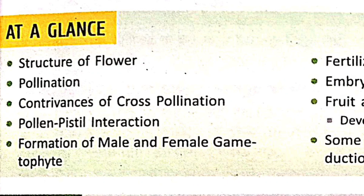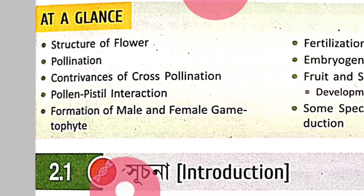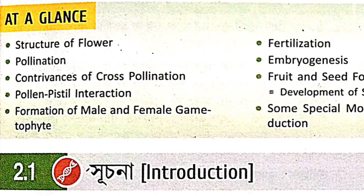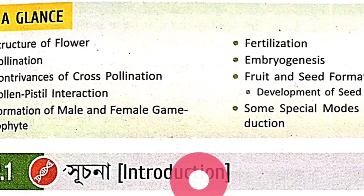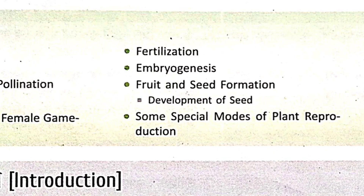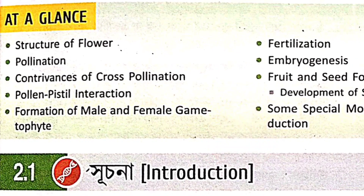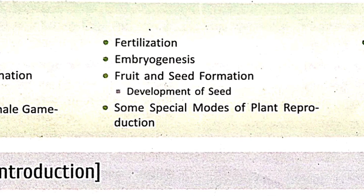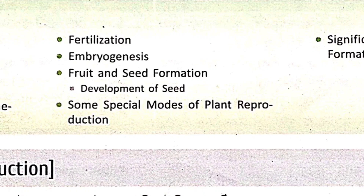Next, formation of male and female gametophyte. Formation means Microsporogenesis and Megasporogenesis - it is important. Fertilization is also important. Embryogenesis is important. So last three points: pollen-pistil interaction, formation of male and female gametophyte, fertilization, embryogenesis. Fruit and seed formation - fruit and seed plus cotyledon, forms and different examples - this is important. Some special mode of plant reproduction - different apomixis and parthenocarpy types are important. Significance of fruit and seed formation.